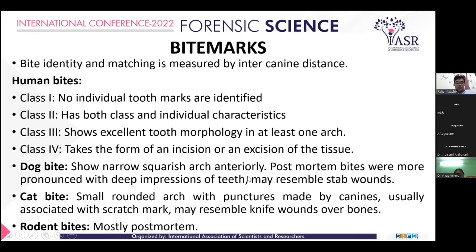Bite marks from various animals differ in morphology. Dog bites show a narrow, squarish arch anteriorly, and post-mortem bites are more pronounced with deep impressions of teeth and may resemble stab wounds. Cat bite marks are small rounded parts with punctures made by canines, usually associated with scratch marks from their paws, and may resemble knife wounds over bones.